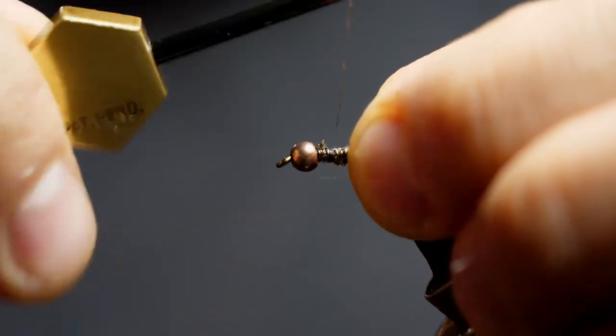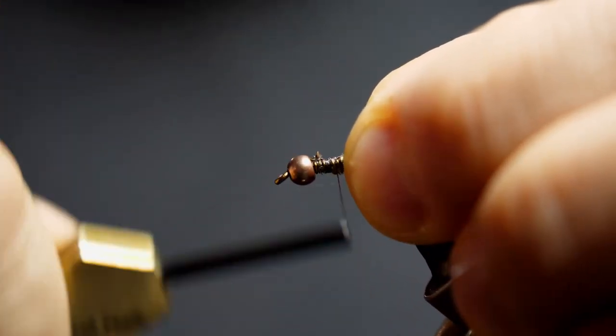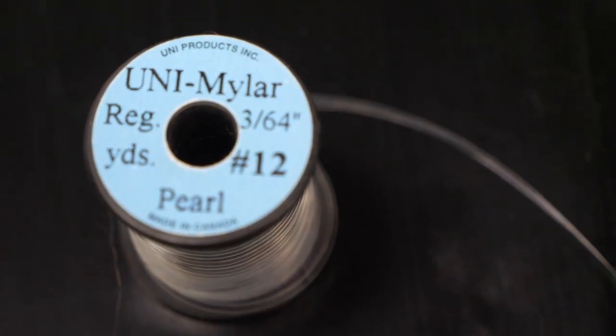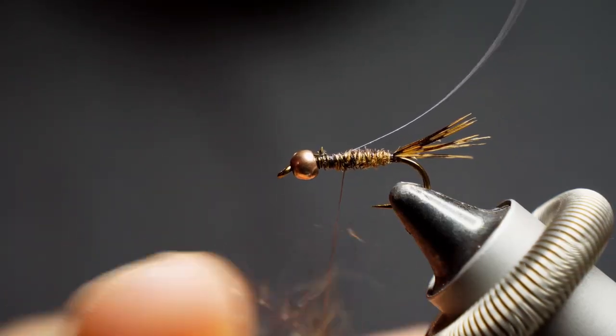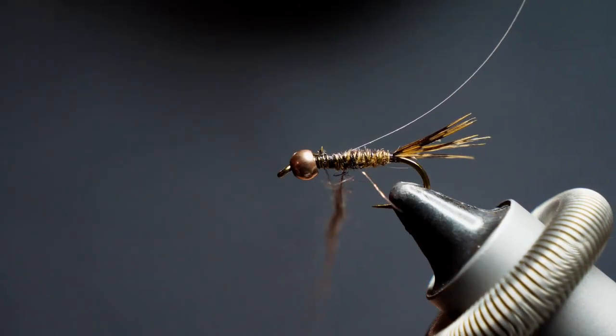Now that we've done that, it's time to put in the flashback tinsel. So I'm just using a pearl-wide tinsel here, locking that down in place, and I want it curving away from the hook.